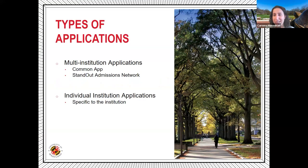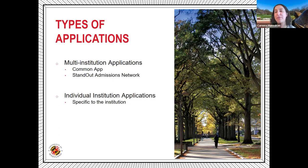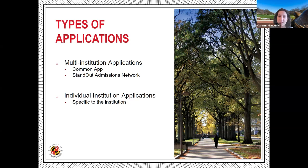A great thing to note about the college application process is there are a few different types of applications. Some schools are on multi-institution applications — websites where you can put all your information in a stored locker, then click on what universities you want to apply to and answer their school-specific information. The two most common are the Common App, with over 900-plus members, and the Standout Admissions Network, which is very similar.